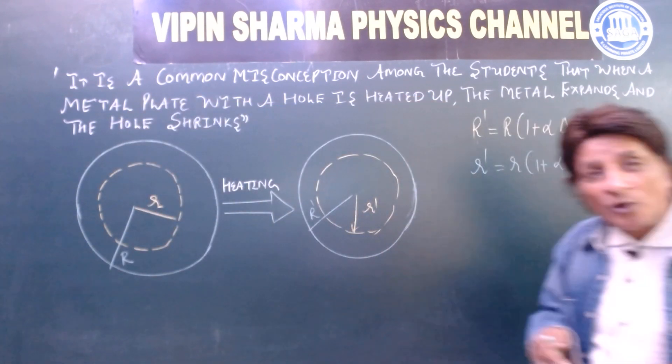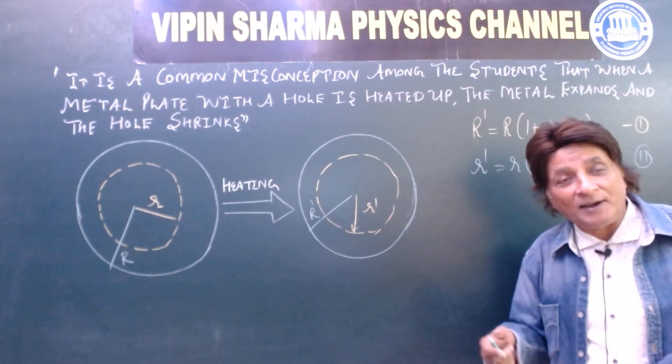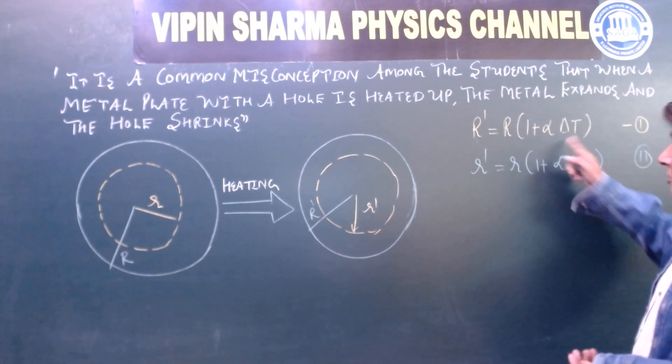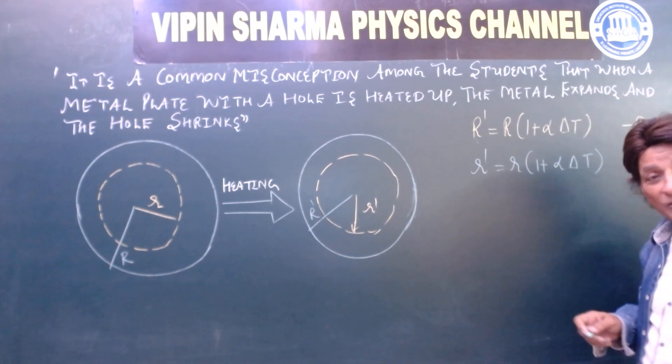So we have used the concept L equal to L naught 1 plus alpha delta t. Alpha is called coefficient of linear expansion.